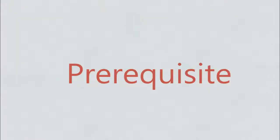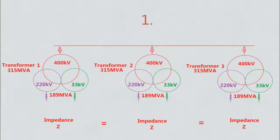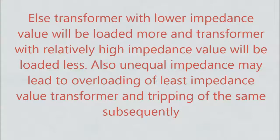Let's look at the prerequisites of transformer parallel operation. The most important condition is that all the transformers should have the same impedance value so as to share equal load. Otherwise, the transformer with lower impedance value will be loaded more and the transformer with relatively high impedance value will be loaded less. Also, unequal impedance may lead to overloading of the least impedance value transformer and tripping of the same subsequently.